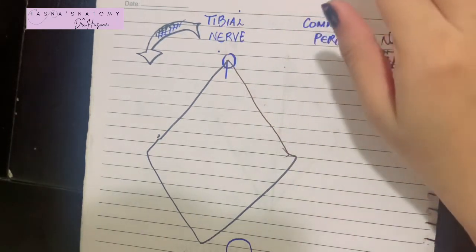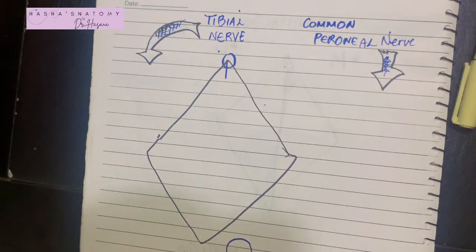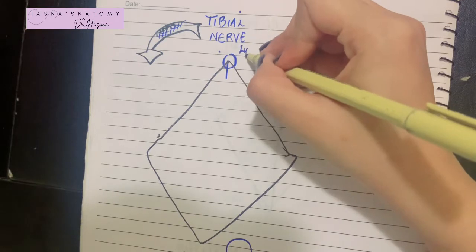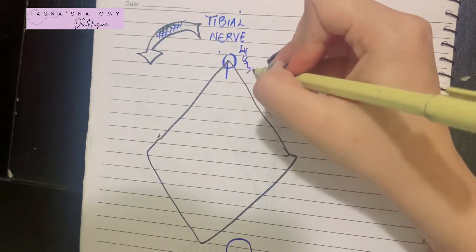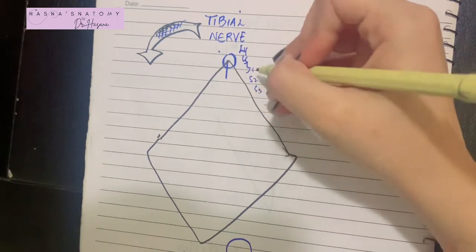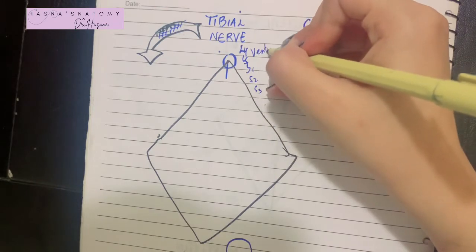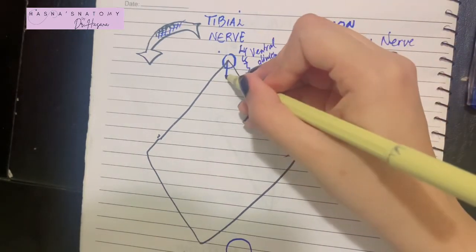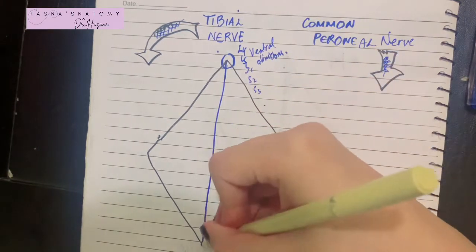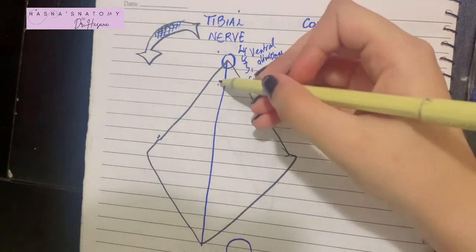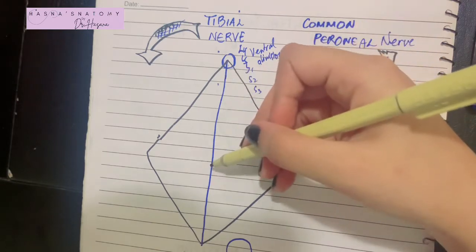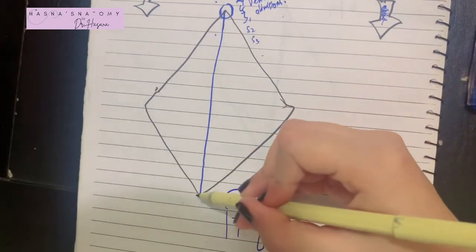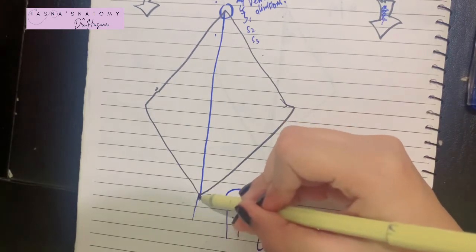The root value of the tibial nerve is very important — it arises from the ventral divisions of L4, L5, S1, S2, and S3 from the sciatic nerve. Its course runs from the superior angle of the popliteal fossa all the way to the inferior angle of the popliteal fossa. It is the most superficial structure of the popliteal fossa, and it does not terminate there — it continues into the leg.